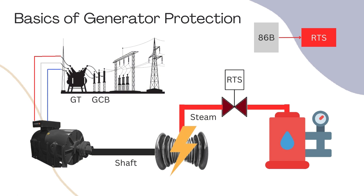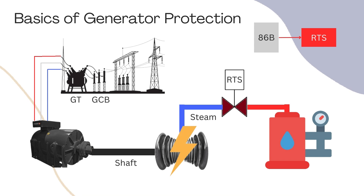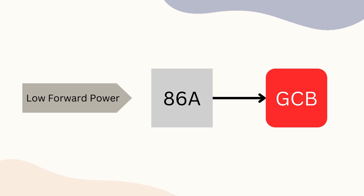If a fault occurs in the turbine, Class B protection will operate. The relay will send a close command to the RTS valve to stop the steam flow to the turbine. Despite this, some kinetic energy will keep the rotor rotating for a while and generate power. This lower power generation will activate the low forward power relay, which will send a command to the Class A relay (86A), tripping the GCB to isolate the generator from the grid.